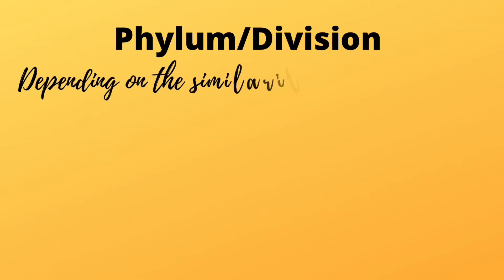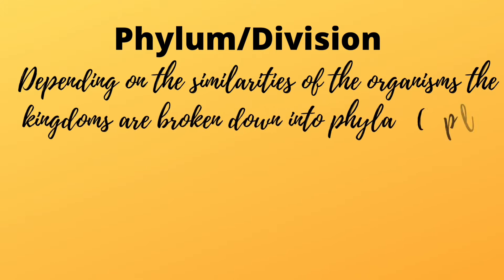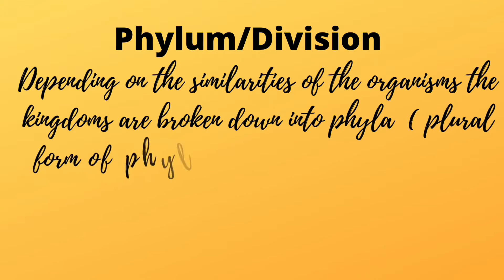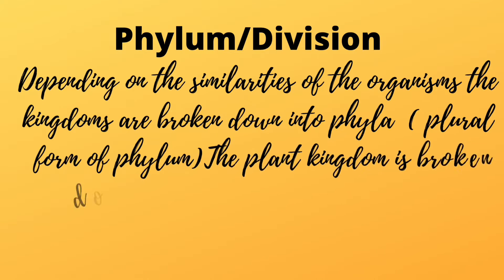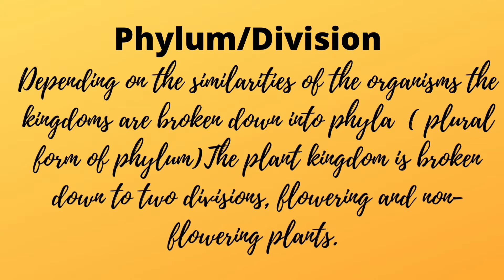Phylum or division. Depending on the similarities of the organisms, the kingdoms are broken down into phyla, the plural form of phylum. The plant kingdom is broken down into two divisions: flowering and non-flowering plants. Note that only the animal kingdom is broken down into different phyla, while plants are broken down into different divisions.